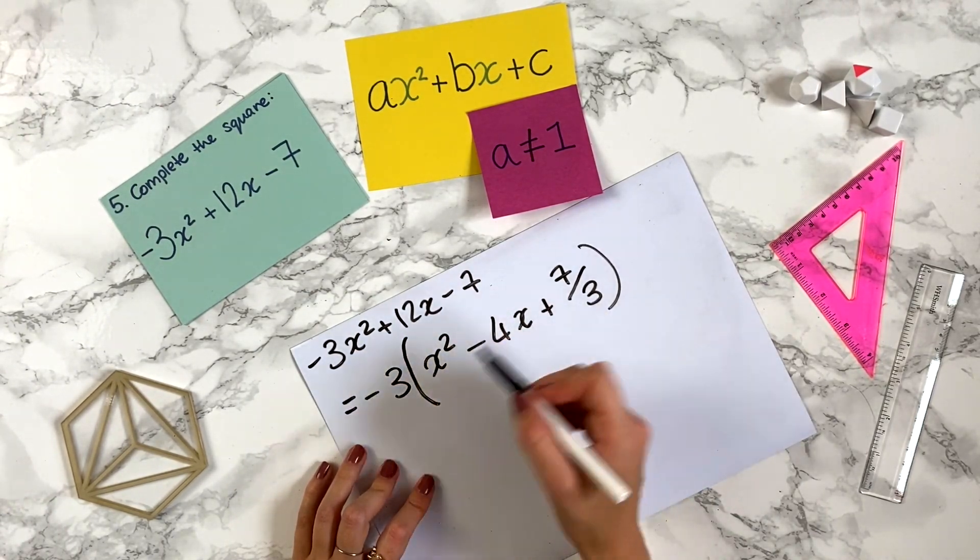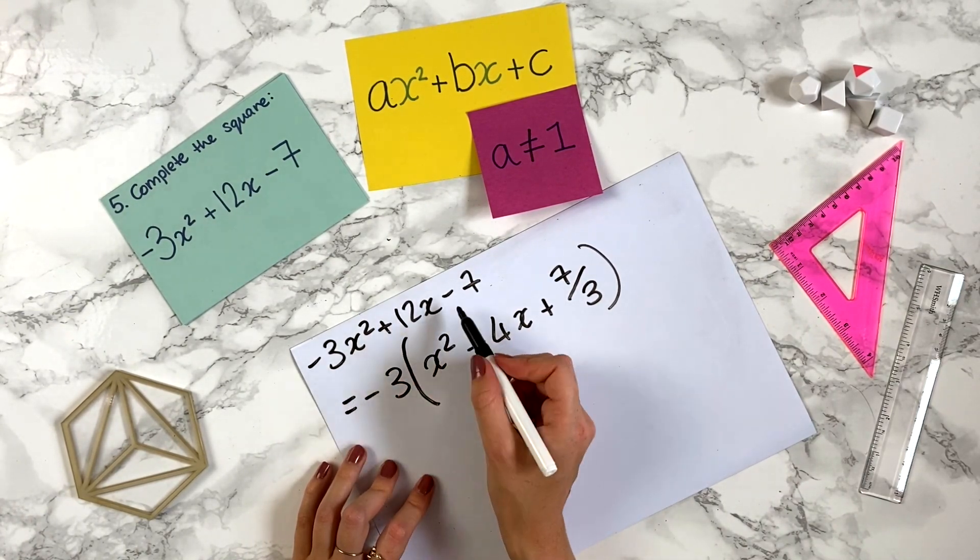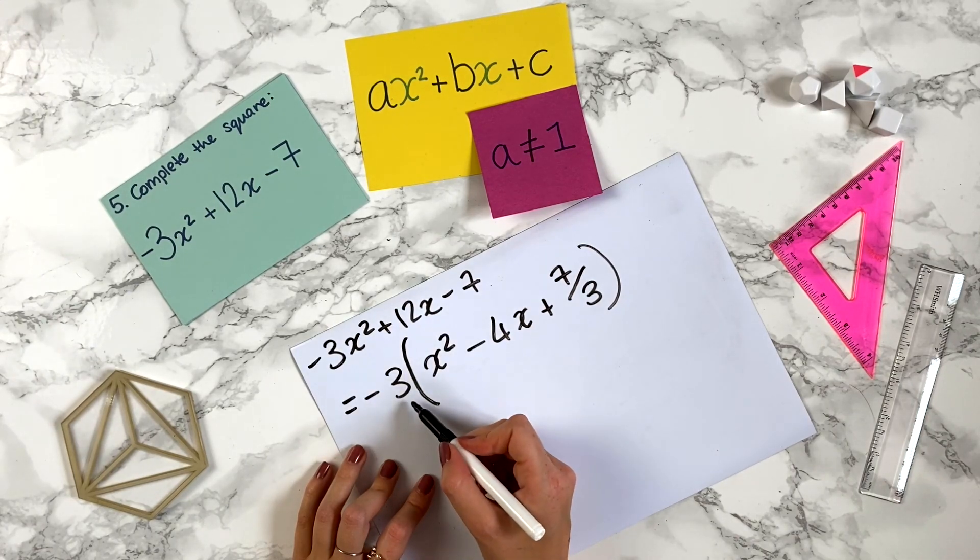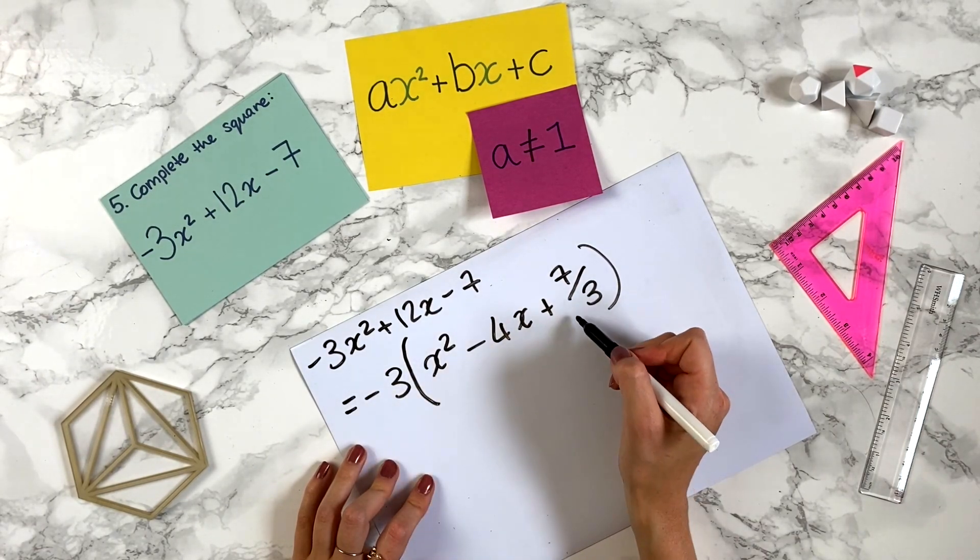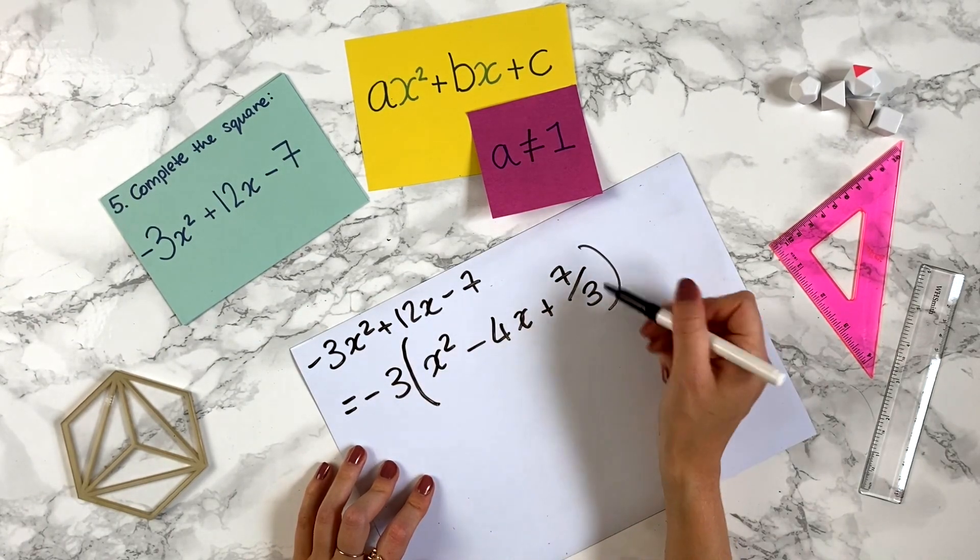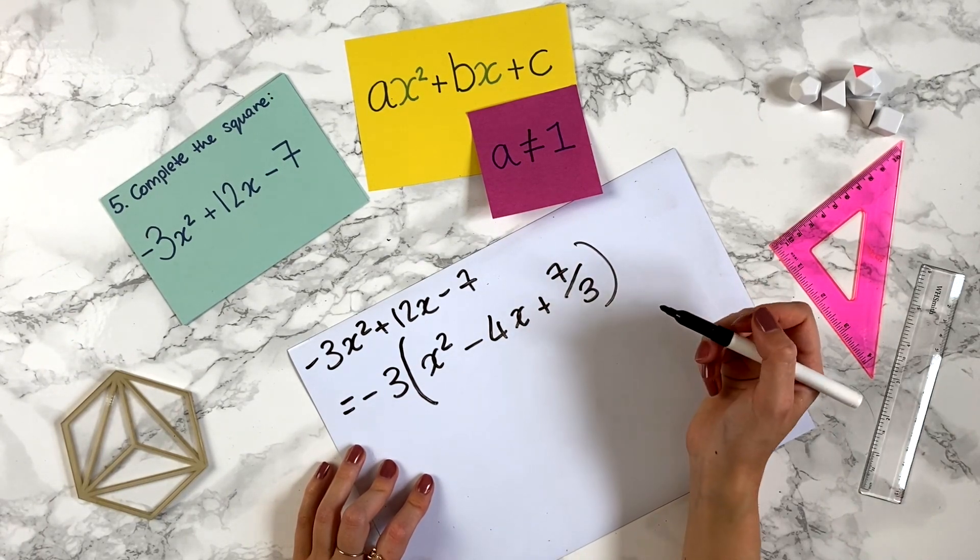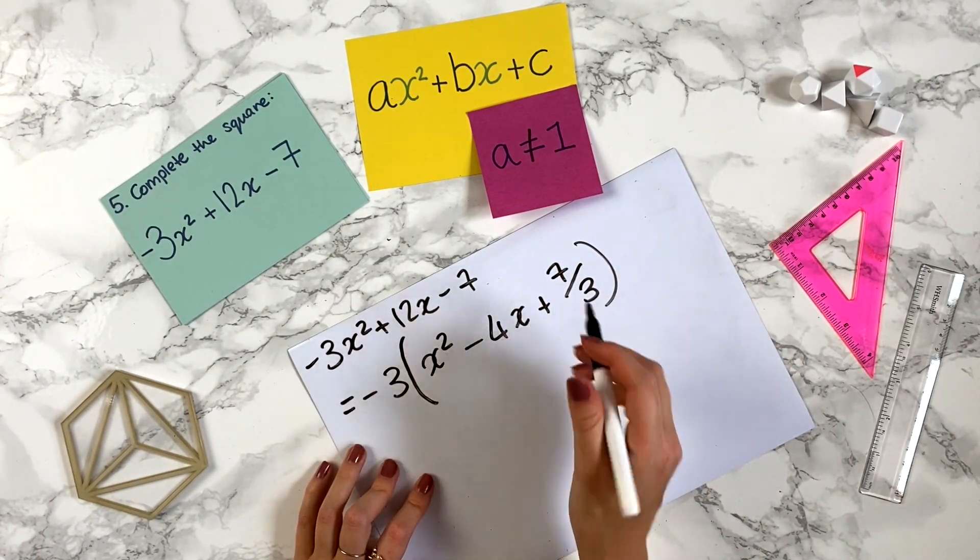So if you expand this out you get minus 3x squared, minus 3 times minus 4x is plus 12x, minus 3 times 7 over 3 is going to give us minus 7. So don't worry there's a fraction there, sometimes that happens when you complete the square but it's okay, fractions we can work with. So this line is the same.